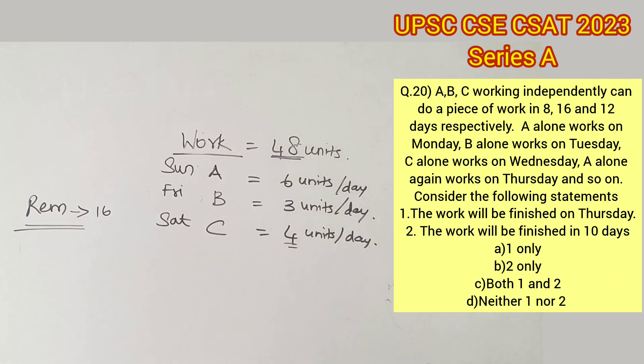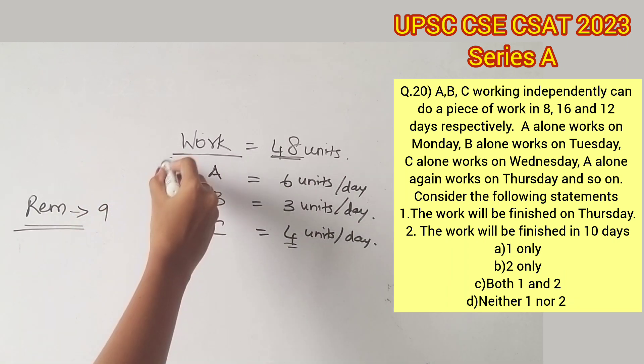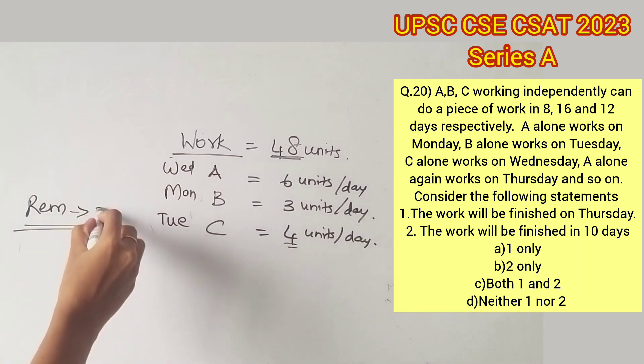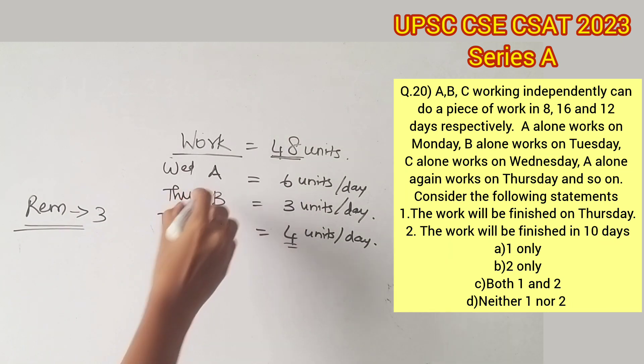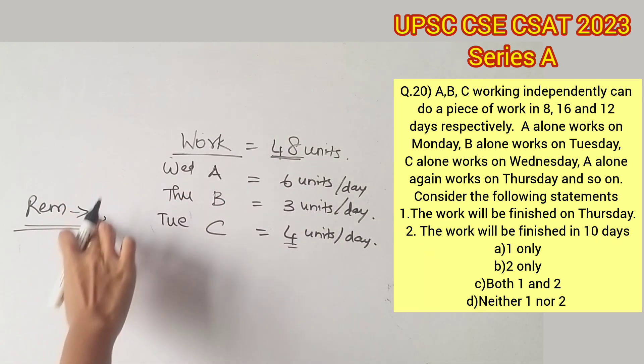Monday, B would complete the next 3 units. Tuesday, C would complete the next 4 units. Wednesday, A would complete the next 6 units, which leaves us with only 3 units remaining out of the whole work.